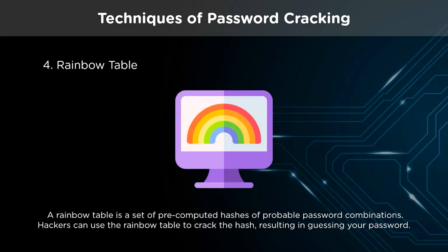Now that passwords have been hashed, hackers attempt to achieve authentication by breaking the password hash. They accomplish this by employing a rainbow table, which is a set of pre-computed hashes of portable password combinations. Hackers can use the rainbow table to crack the hash, resulting in guessing your password. As a result, it retrieves the password hash from the system and eliminates any need to break it. Furthermore, it does not necessitate the discovery of the password itself — the breach is accomplished if the hash matches.